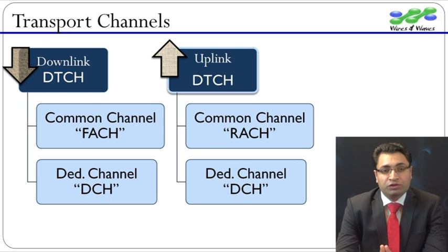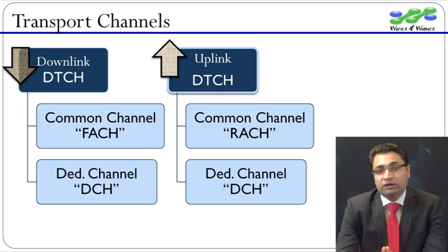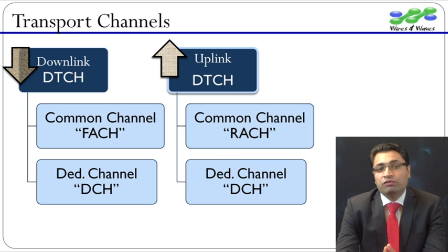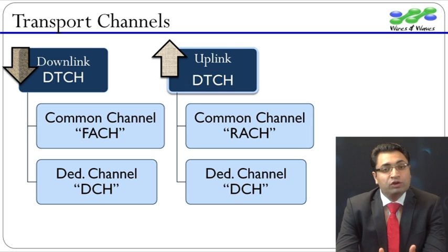In uplink also, we have two options for mapping logical channel DTCH onto transport channels. We could use common transport channel RACH or dedicated transport channel DCH. Please note: in 3G, RACH can also carry signaling and a small amount of non-real-time data, whereas in 2G, RACH is a pure signaling channel used for channel request. In UMTS, DCH is the main transport channel which generates revenue for operators.